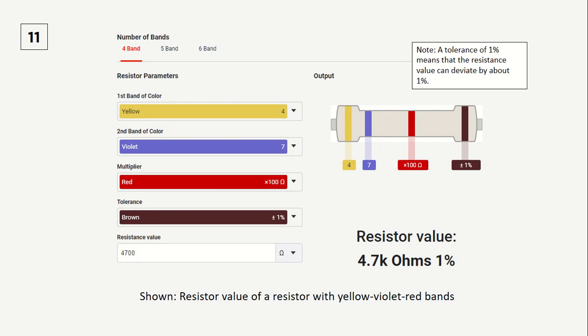Therefore, a three band resistor with yellow, violet, red markings has a resistance value of 4,700 ohms. Since yellow means 4 and purple means 7, while red means that 47 needs to be multiplied by 100.